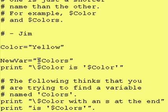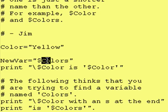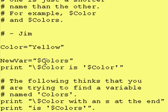Cornshell, when it sees the dollar sign, it automatically thinks, okay, I have a variable name coming after this. Variable names in Cornshell can have letters, numbers, and underscores — it just can't start with a number. So what Cornshell does is it sees these letters and it looks for something that is not a letter, nor a number, nor an underscore. In this case, it sees color with an s at the end and it thinks that's your variable name.